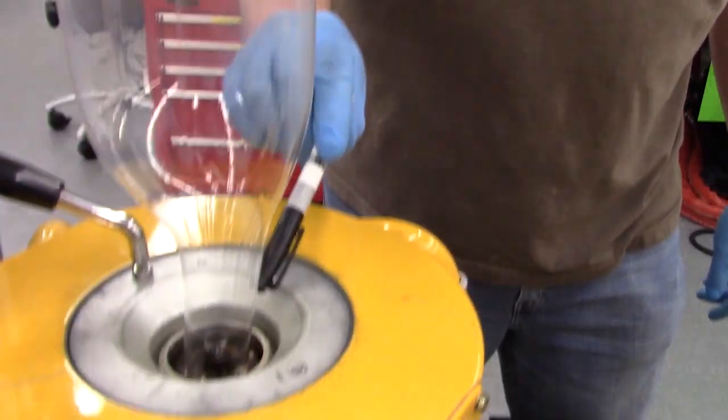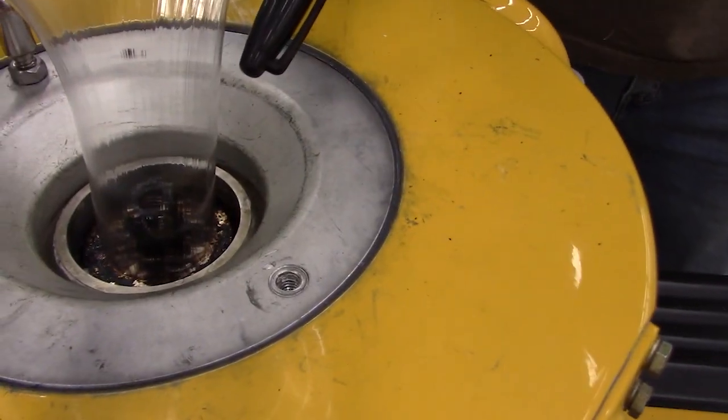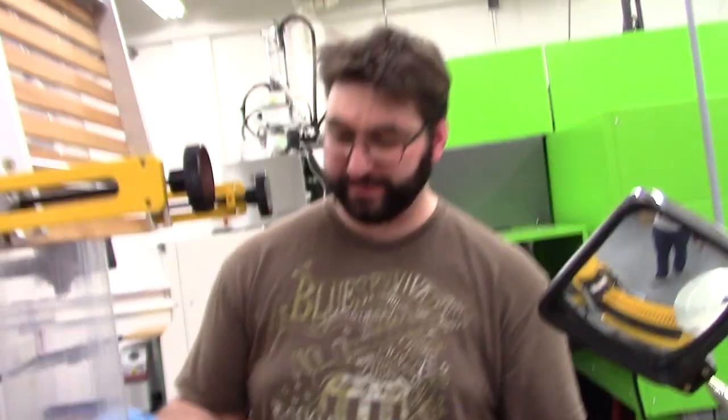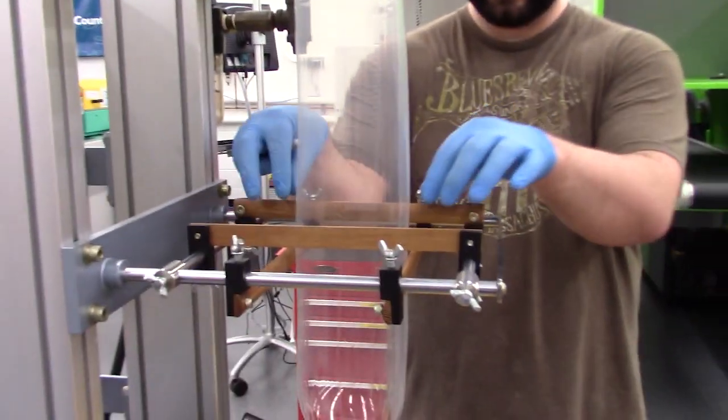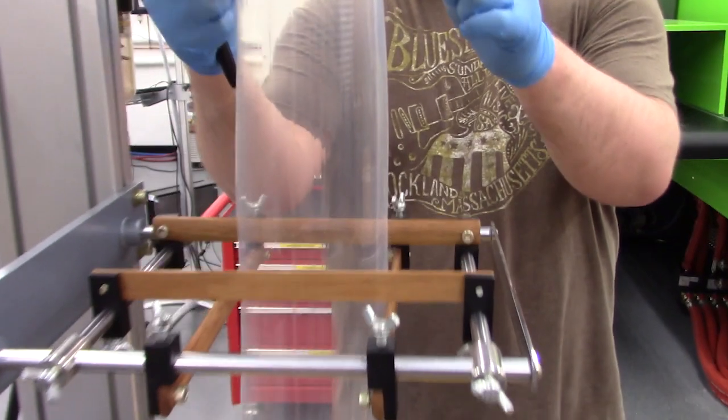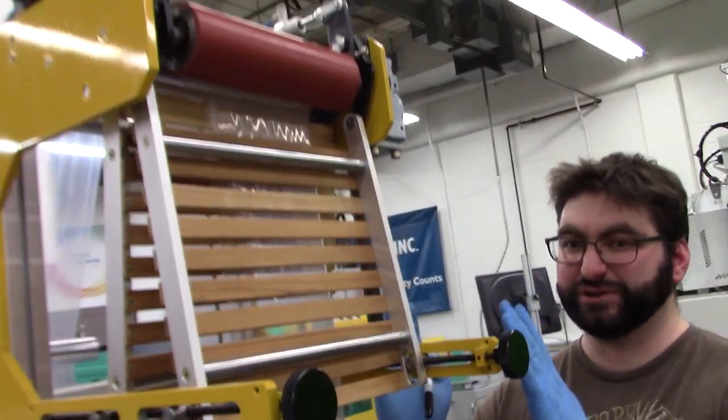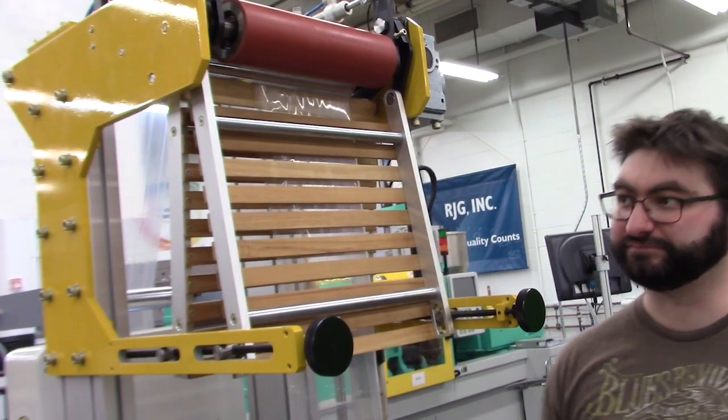We have an internal air ring, an air hose that introduces the air. That's how we control the diameter of our bubble. The bubble comes up through these guide rails, through the collapsing frame that ensures a nice, smooth, unwrinkled bubble.